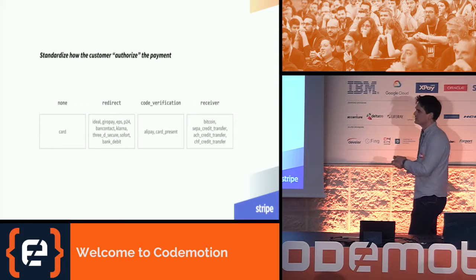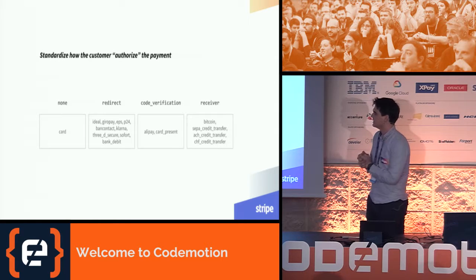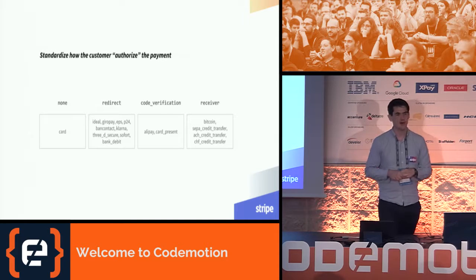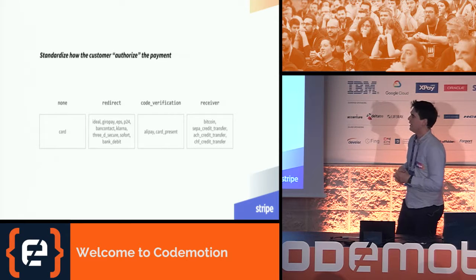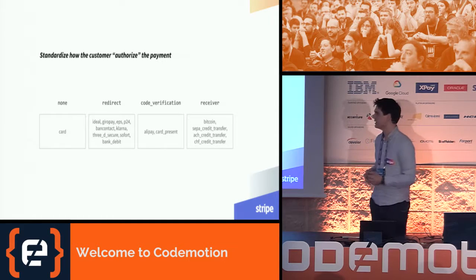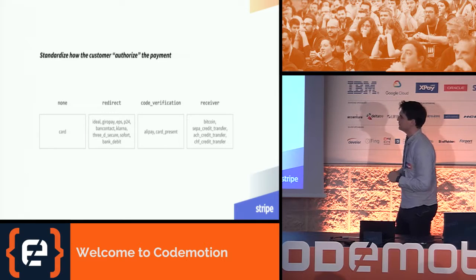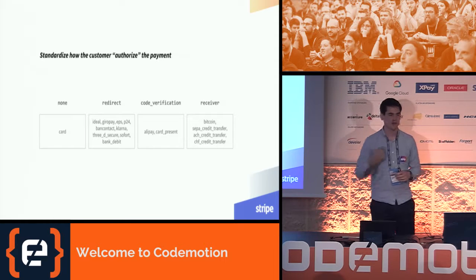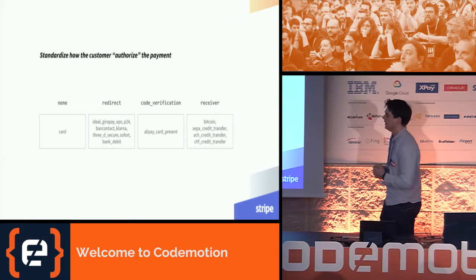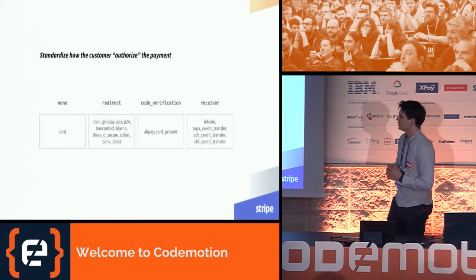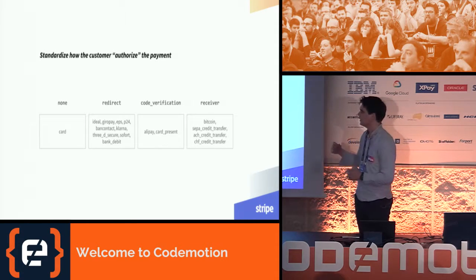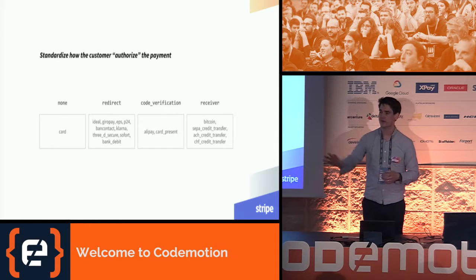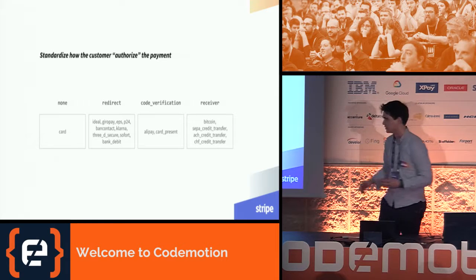When we looked at the different payment methods, we realized you can group them into four big categories of authentication flows — everything that needs to happen before the payment can be executed. You've got the no-flow, like cards, where you don't have to do anything. A redirect flow, where you send customers through a redirect and when they come back, the payment can be executed. A code verification flow, which is basically a 2FA code. Or a receiver flow, where you generate an address and the customer has to push funds to that address — only after the funds arrive can you charge it to your Stripe account.